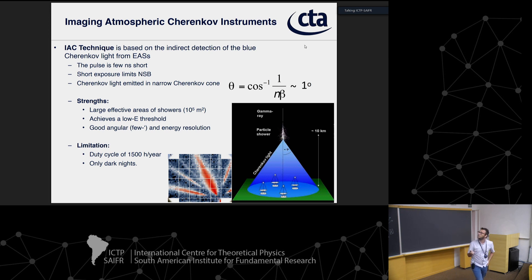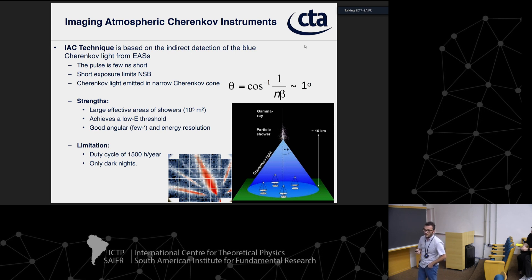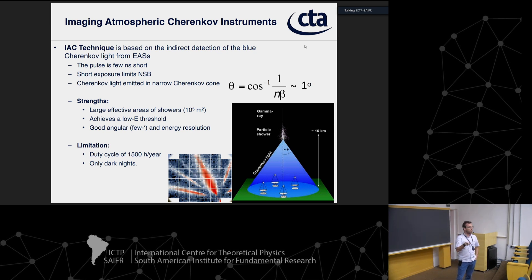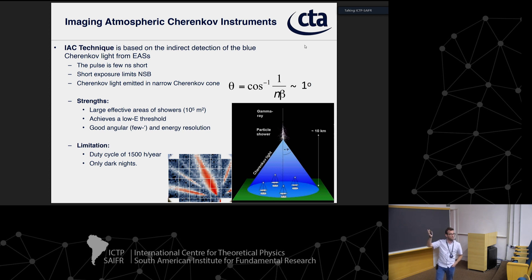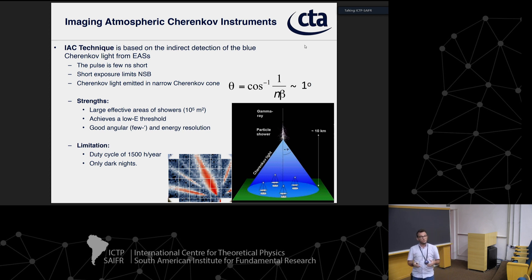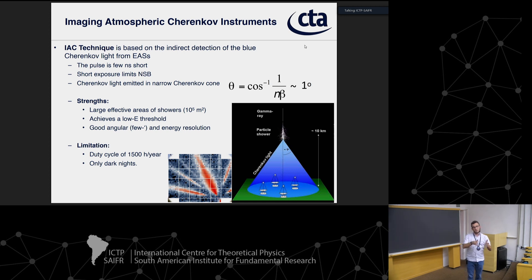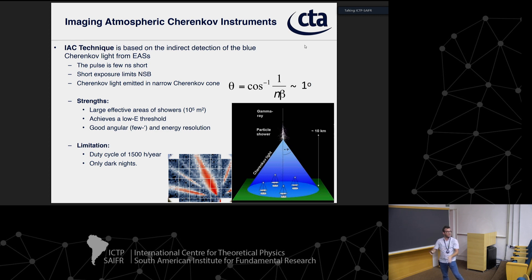To recap: the imaging atmospheric Cherenkov technique uses an indirect means to observe gamma rays by detecting the Cherenkov light yield of particle cascades that develop in the atmosphere after penetration of a gamma ray or cosmic ray. The atmosphere serves as a calorimeter — the Cherenkov yield of the shower is proportional to the energy of the incoming particle. Through simulation, if you know your atmosphere model and the direction the gamma rays are coming from, you can reconstruct the energy.